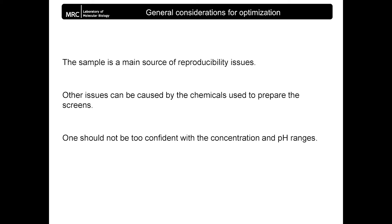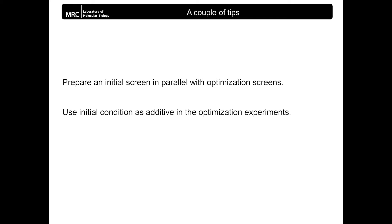More parameters than those just mentioned could have altered the initial screen formulation — for example, some errors during preparation, evaporation, etc. It is a good idea to prepare initial screens in parallel with optimization screens as a control. Also, when reproducibility issues are really bad, the initial condition can be used as an additive in the optimization experiments.